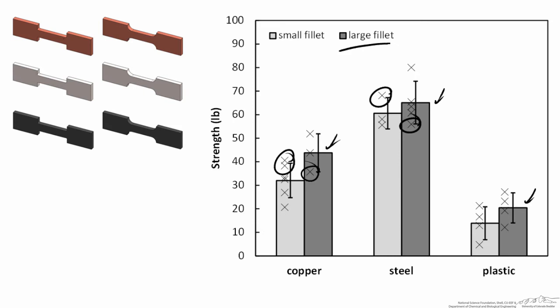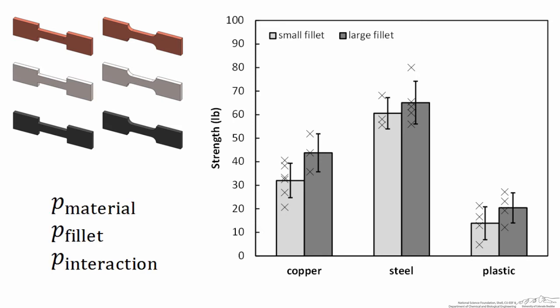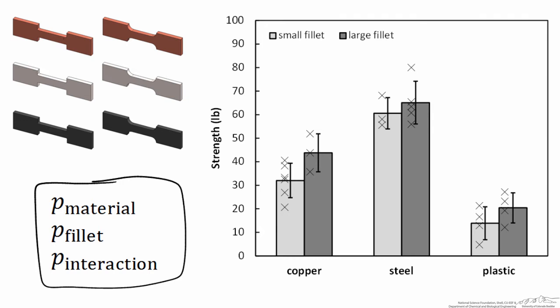We wonder: is it by chance that the large fillets are stronger, or is this a real phenomenon? Can we justify that they are indeed stronger? That's tough to tell without doing a two-factor analysis of variance, and that's a real utility of doing statistical analyses when it's tough to tell whether a difference is significant. Probably the most useful output from a two-factor ANOVA are three different p-values — in this case, p-material, p-fillet, and p-interaction. Typically a small p-value, less than 0.05, means that factor makes a significant difference. Looking at this data, I would expect a relatively small value for p-material.